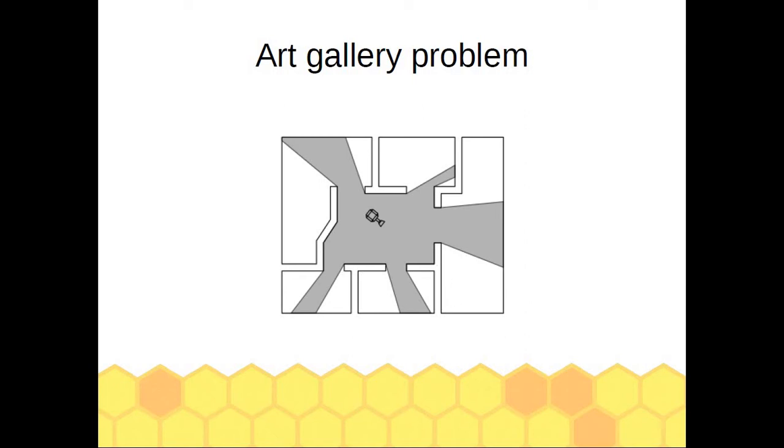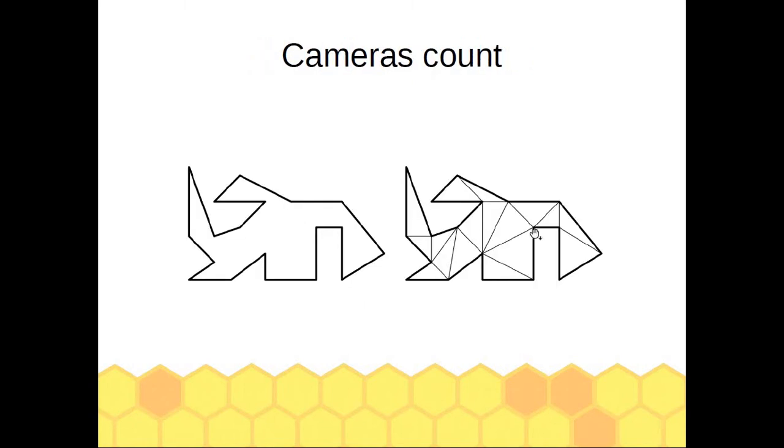You should output the points in the polygon where we can place these cameras. How many cameras do we need to guard a polygon? That depends upon the polygon—the more complexity, the more cameras we need. For simple polygons like convex polygons, we just need one camera, but every polygon is not convex.